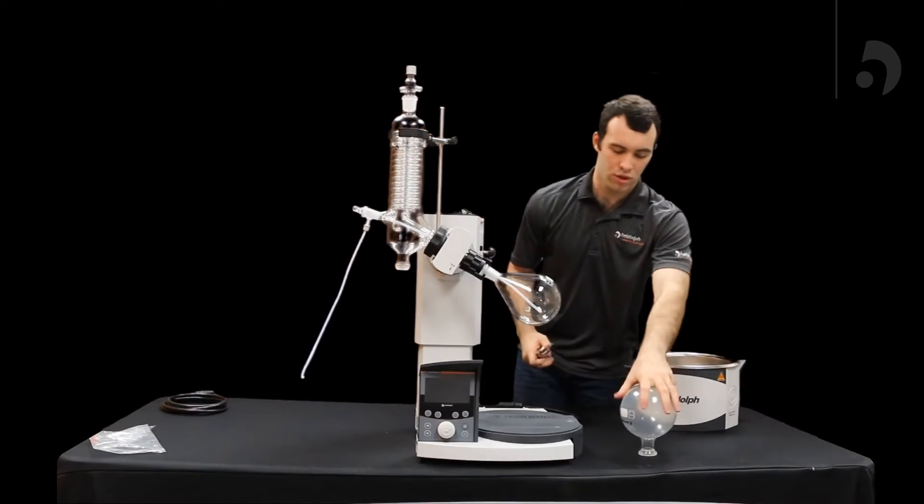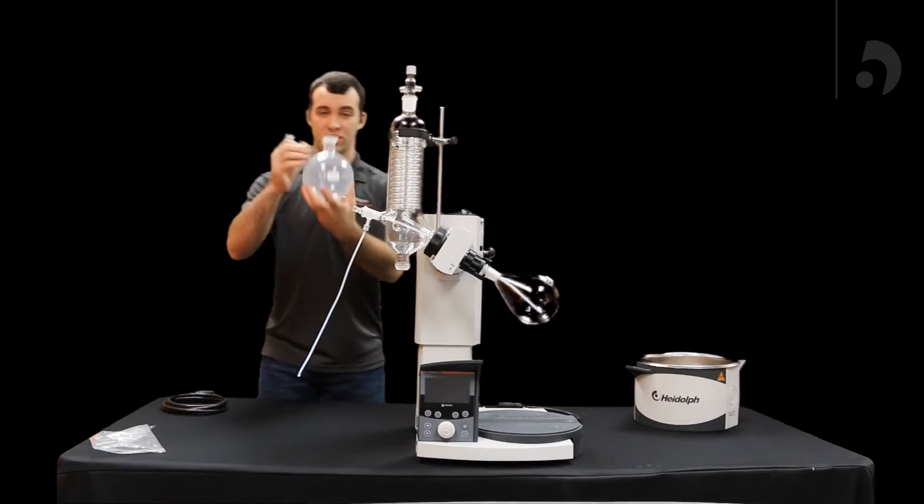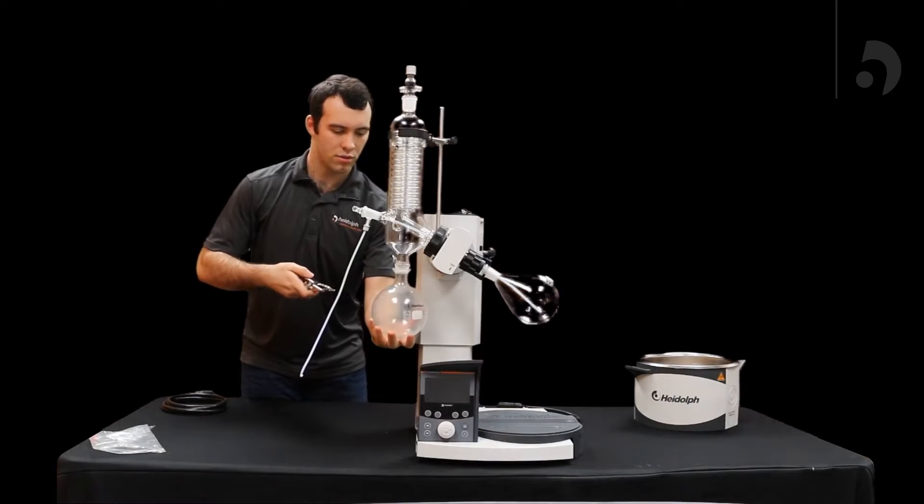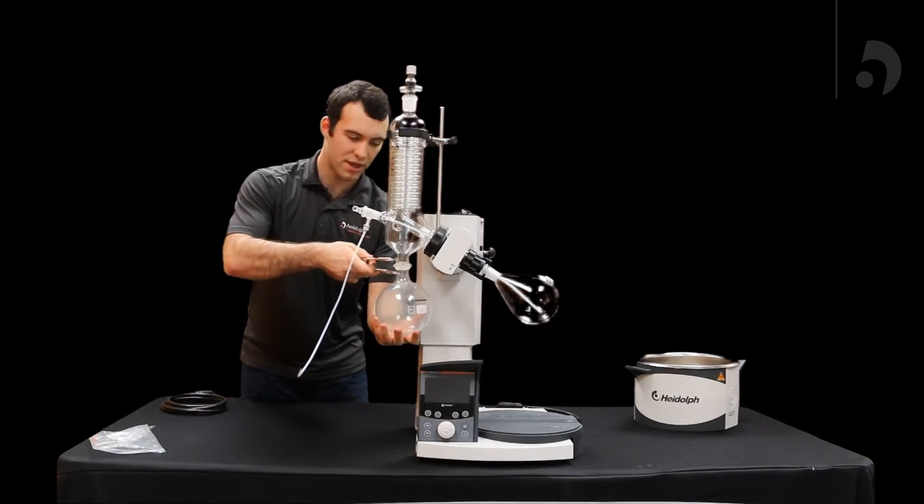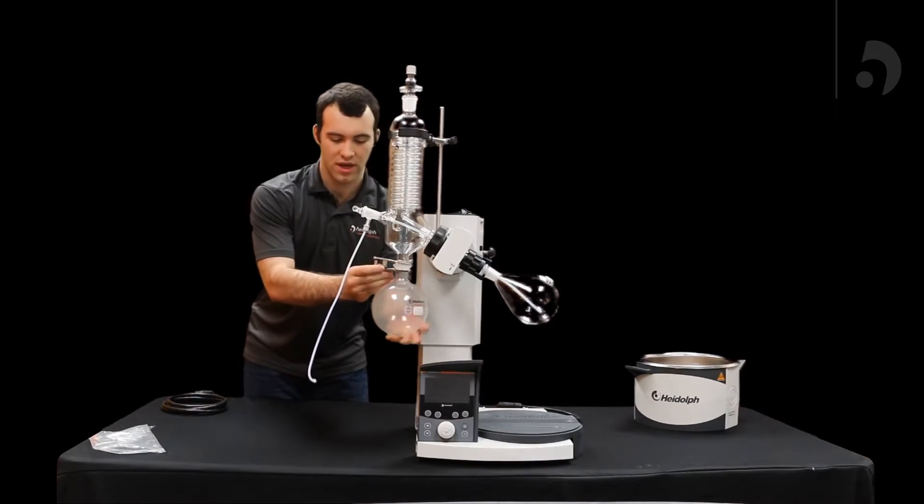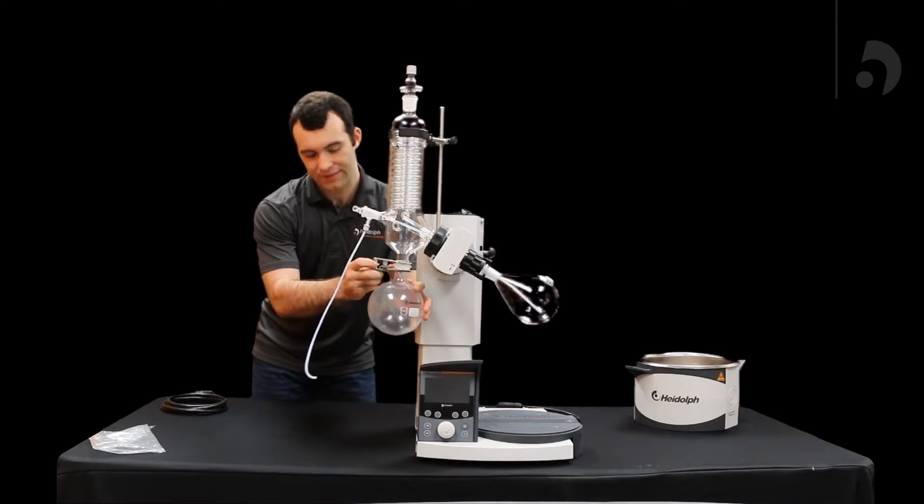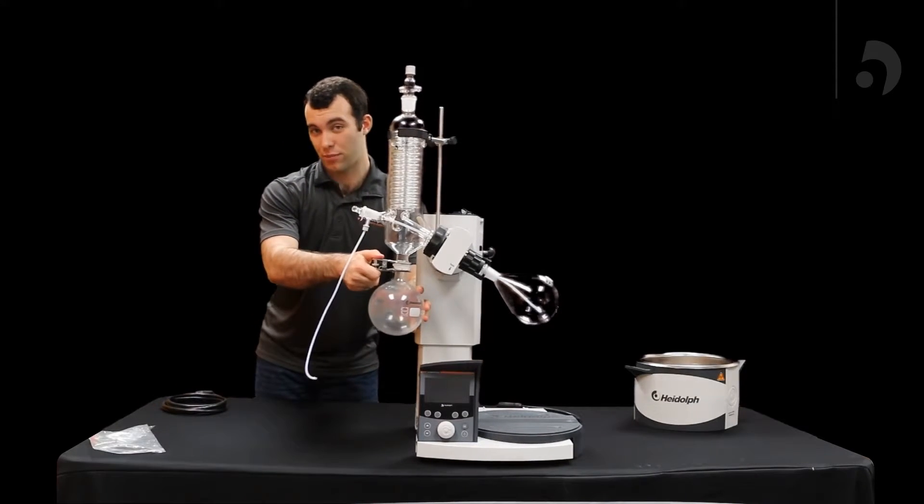Now, you're going to take your receiving flask, along with the receiving flask clamp, put them right at the bottom, open up your clamp, slide it on over, and now you're going to see this screw right here, tighten it so that the clamp will not open.